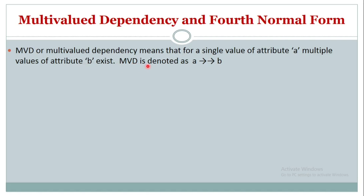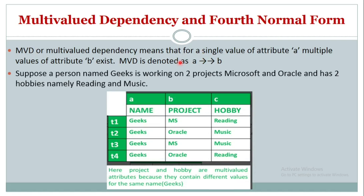Multi-value dependency is usually denoted as A multi-determines B. For the informal definition: for a single value of attribute A, multiple values of B exist. As you can see here, for 'geeks' we have projects Microsoft and Oracle, and also geeks multi-determines C as well — geeks reading and geeks music. This is an example of a multi-value dependency.